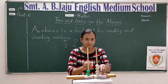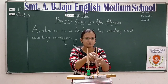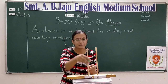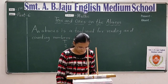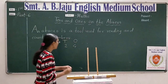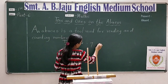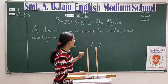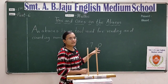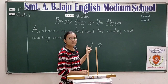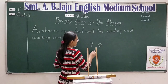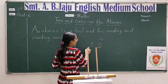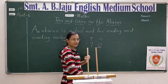Ab hum next number dekhte hain. Next number koi bhi two digit number hoga. Okay? Suppose hamara number hai seventy. Okay? Ab hamne tap kiya — ones place pe konsa digit hai? Aur tens space pe konsa digit hai? Yes. Ones place pe kya hai? Zero hai. Aur tens space pe kya hai? Seven hai.